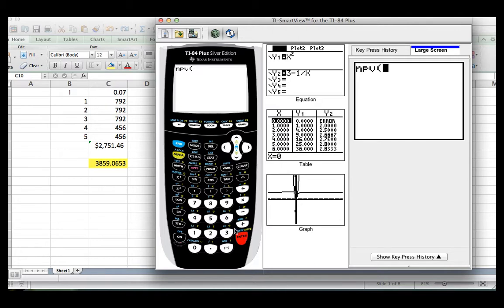Now, the first step is to put the rate. I just put 7. The calculator is a little bit smarter than Excel in this case, because when you put 7, it understands it's 0.07. Then, you're going to have the cash flow, 0, because we don't have any cash flow at the beginning, comma, and then you're going to do second brackets, and you're going to put your cash flow, 792, 792, 792, 456, 456.